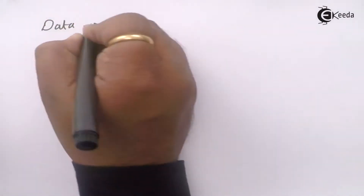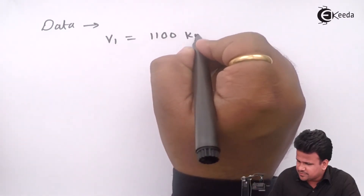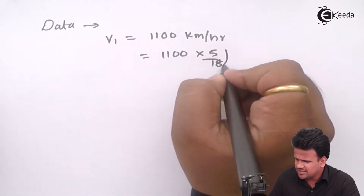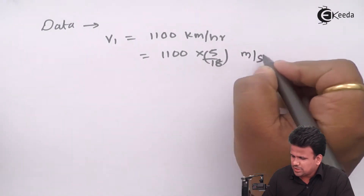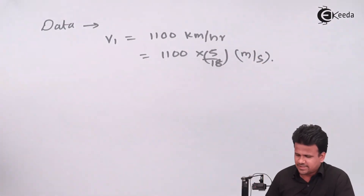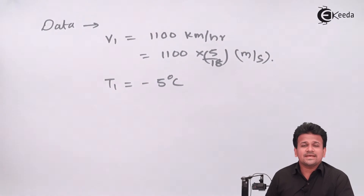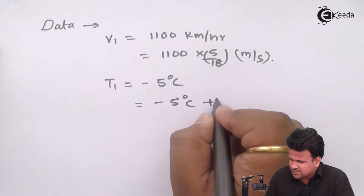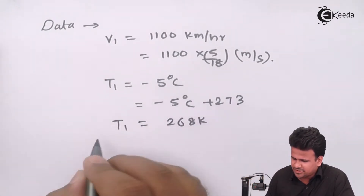The data given to us: V1 equals 1100 kilometers per hour, which will be 1100 into 5 upon 18 meters per second. The temperature T1 equals minus 5 degrees Celsius. The important part is we have to convert this into Kelvin, so T1 equals minus 5 plus 273, which gives 268 Kelvin.